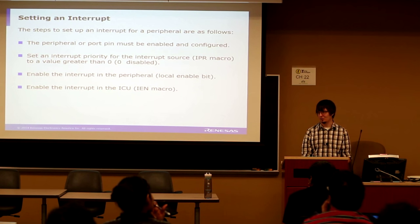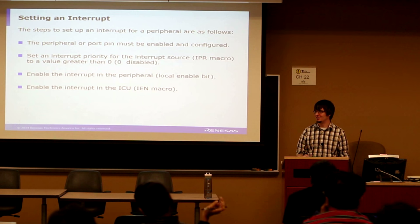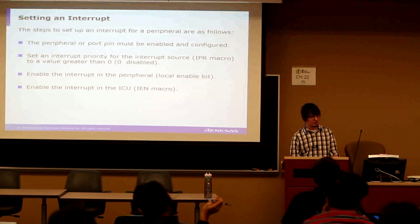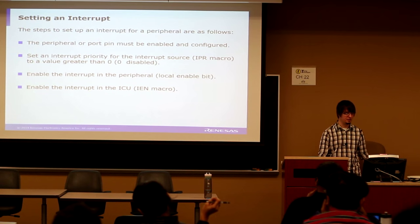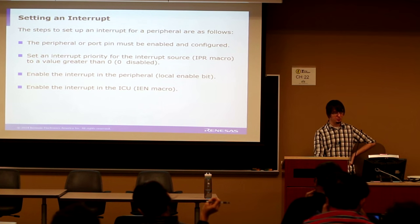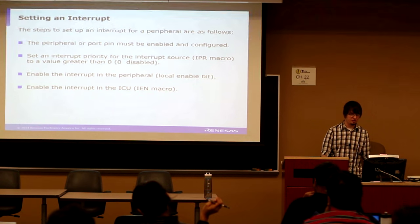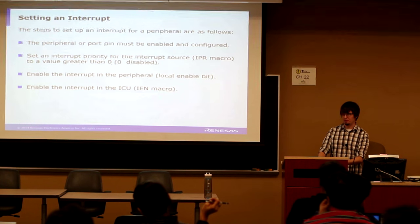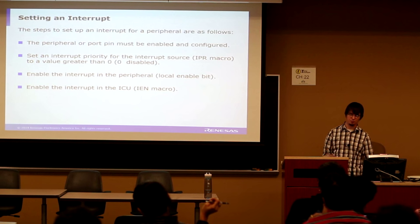For configuring an interrupt on your microcontroller, there are a few steps. The peripheral or port pin must be enabled and configured first — if setting up an interrupt for ADC, configure the ADC first. For external interrupts from a GPIO, configure it as an input with the data direction registers. Be sure to assign it a priority — a value of zero means disabled on the 63N. Then make sure you enable the interrupt in the peripheral. Even in the UART polling lab, we still had to enable the interrupt there. Finally, enable the interrupt in the interrupt control unit using those registers.